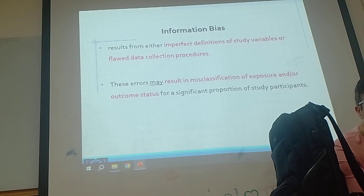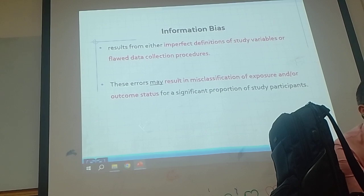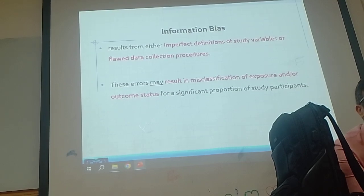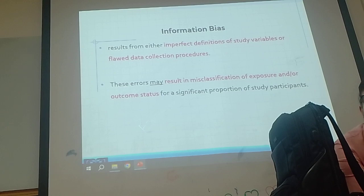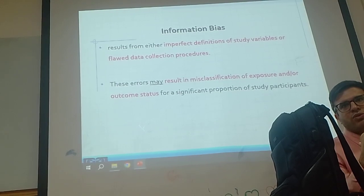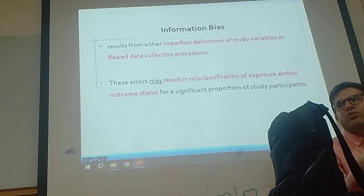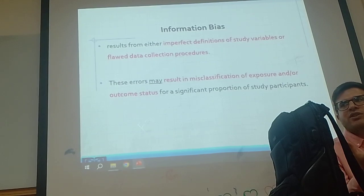We have a lot of study designs: cross-sectional, case-control, cohort, and RCT. Cross-sectional is a descriptive study, because the most important indicator we can estimate from a cross-sectional study is prevalence. But in case-control, cohort, and RCT, the main objective is to determine the association — for example, association between A and B, or X and Y.